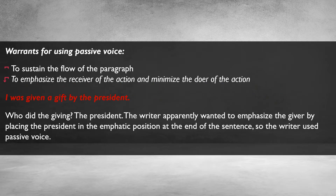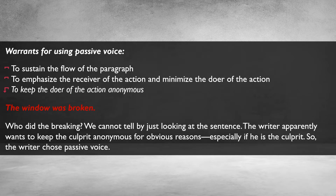Second, to emphasize the receiver of the action and minimize the doer. Consider this example: 'I was given a gift by the president.' Who did the giving? The president. The writer apparently wanted to emphasize the giver by placing 'the president' in the emphatic position at the end of the sentence, so passive voice was used. Third, to keep the doer of the action anonymous. Consider: 'The window was broken.' Who did the breaking? We cannot tell. The writer apparently wants to keep the culprit anonymous — especially if he is the culprit — so the writer chose passive voice.